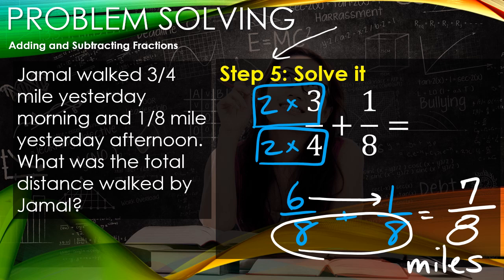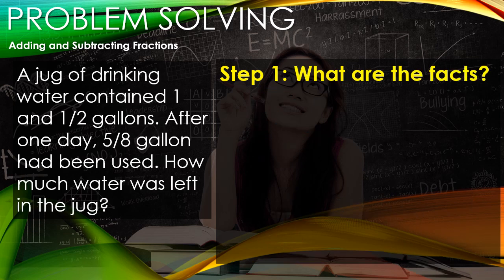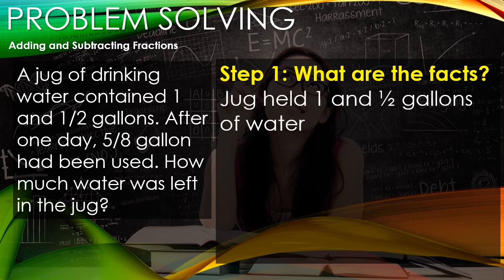Here on the back of the notes page, we have this problem: A jug of drinking water contained 1 and 1/2 gallons. After one day, 5/8 gallons had been used. How much water was left in the jug? Step one is what are the facts? The facts is we had a jug that held 1 and 1/2 gallons of water in it, and 5/8 gallons was used. This might have been a sporting event with a Gatorade container filled with water. This could have been maybe they were on a picnic, maybe they were out camping - who knows. But this jug held 1 and 1/2 gallons, and 5/8 was used. So those are the facts.